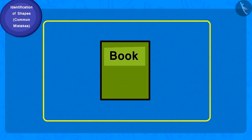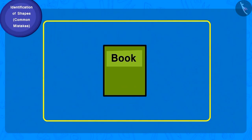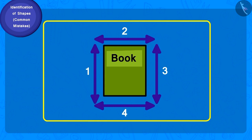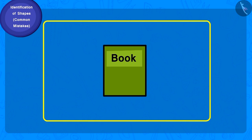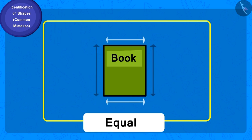Let us look at the book showed by Chacha. How many sides does the book have? And how many corners? Four. Four. But is the length of all the sides of the book equal? No.